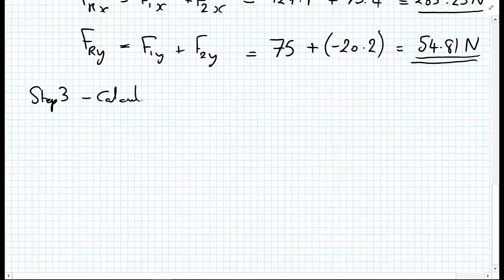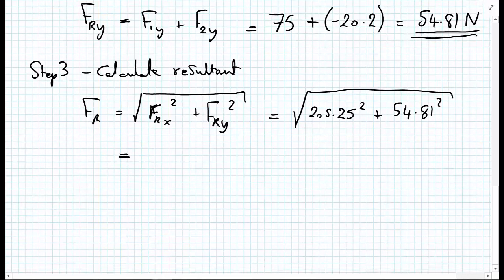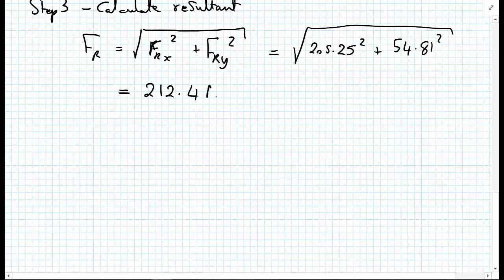Calculate the resultant. So we get FR equals the square root of FRx squared plus FRy squared, which equals the square root of 205.25 squared plus 54.81 squared, all square rooted, and gives us the magnitude of our resultant force vector, is equal to 212.4 newtons.